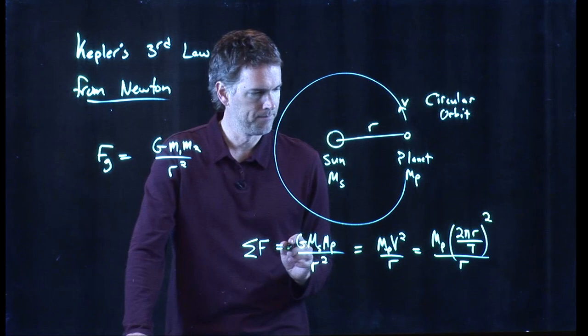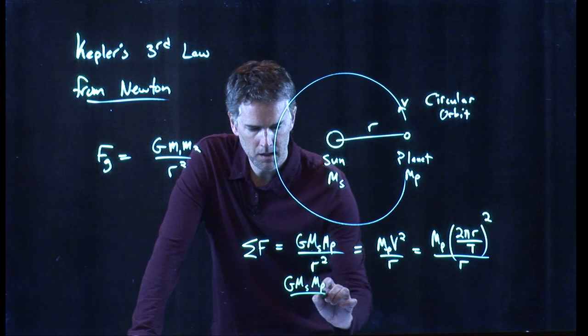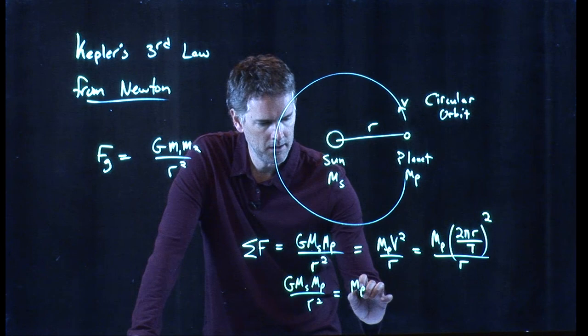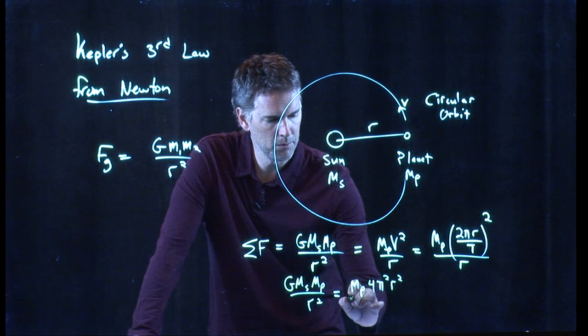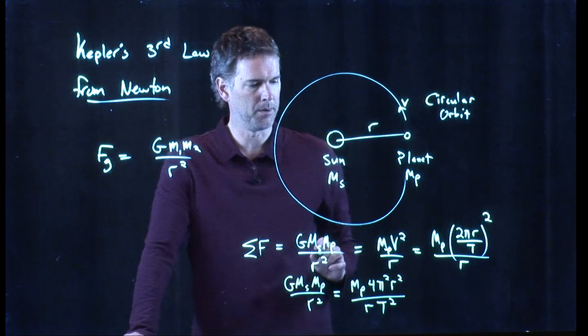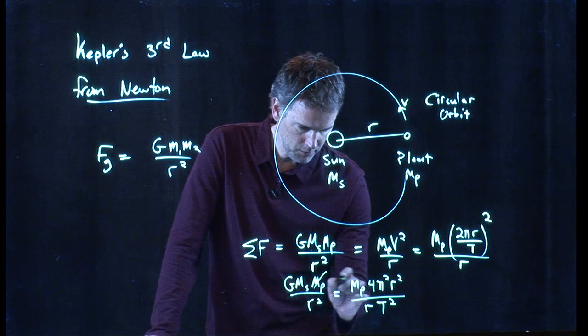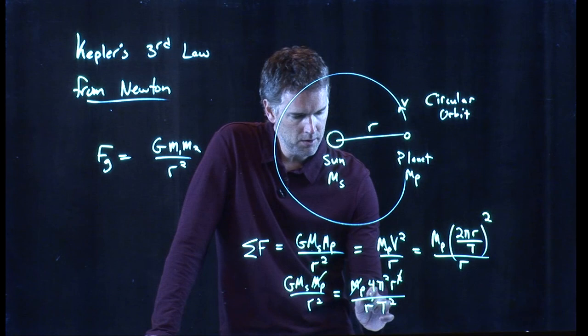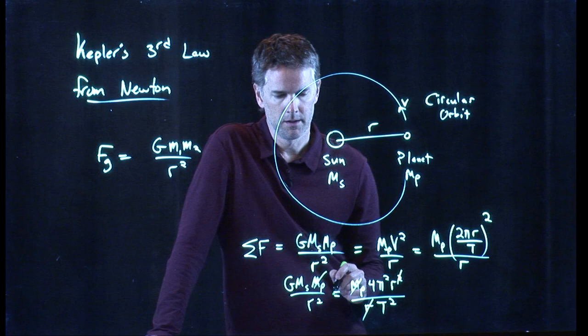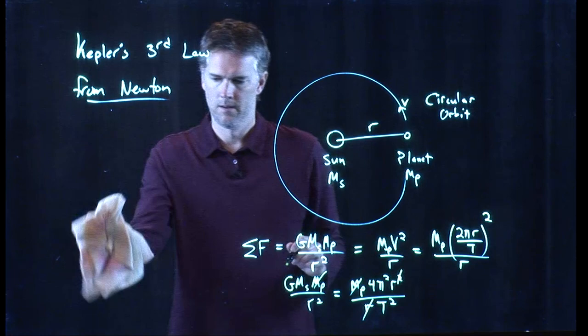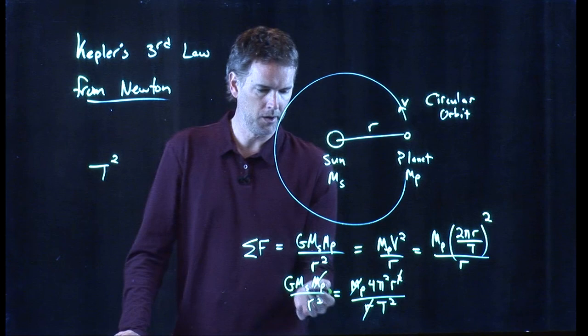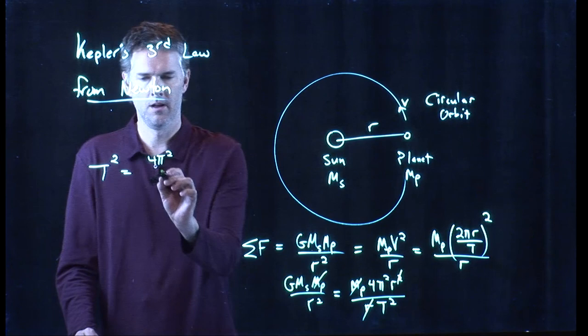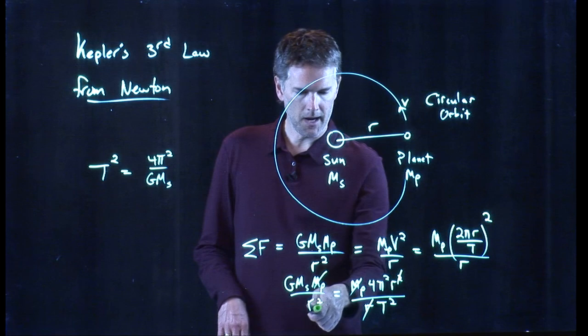And now we can simplify this quite a bit. What do we get? We've got G m sub s m sub p over r squared equals, let's multiply this stuff out. Now, we've got a 4 pi squared, r squared, we have an r in the bottom, and then we end up with a capital T squared in the bottom. And now we can cross out some stuff. m p drops out. If I cancel one of these r's, I can do that. And if I multiply across by r cubed, I can write a very nice formula, which is the following. T squared, let's multiply t squared up over there, equals 4 pi squared divided by g m sub s. And then I gotta multiply r squared up over there, so I end up with r cubed.